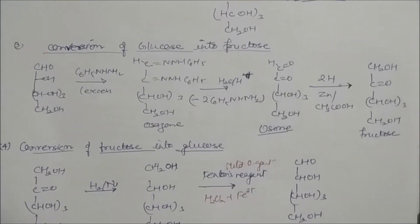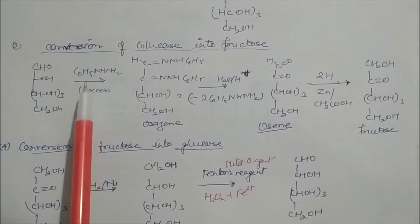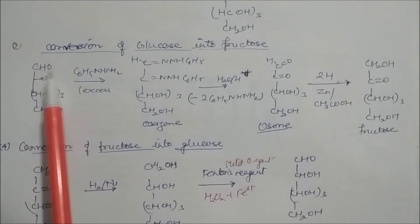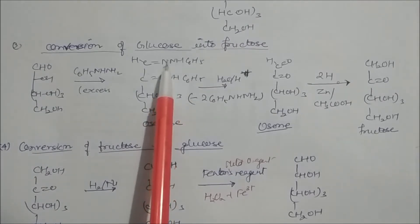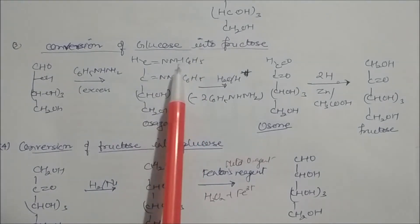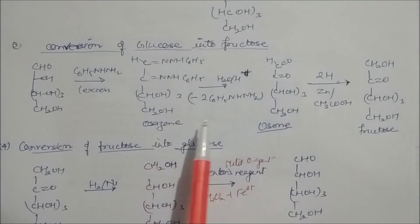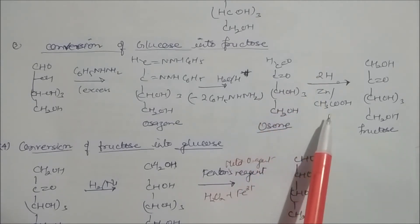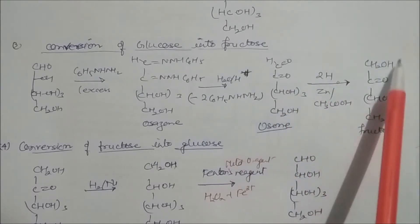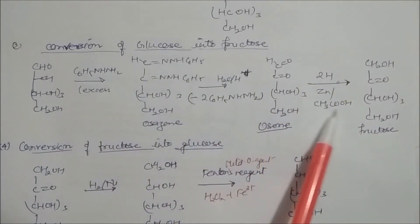Now we see conversion of glucose to fructose. Glucose is treated with excess phenylhydrazine (C6H5NHNH2). The phenylhydrazine reacts at the carbonyl carbon, removing oxygen and adding the hydrazone group to give a phenylhydrazone. Further reaction with excess phenylhydrazine forms the osazone. Acid hydrolysis of the osazone removes two phenylhydrazine units to give the diketone (osone). Reduction of the aldehyde with zinc and acetic acid converts it to an alcohol, yielding fructose.